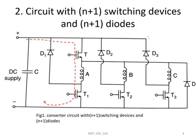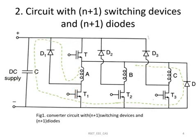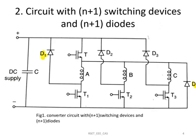For energizing a particular winding, say phase A winding, we need to turn on switches T and T1. Energy starts to flow from the supply to the winding as shown by the dotted lines. When these 2 switches are turned off, the energy stored in the winding will be fed back to the supply through diodes D1 and D3. The direction of current flow is shown by the dotted lines. So energy regeneration or recovery is obtained here.